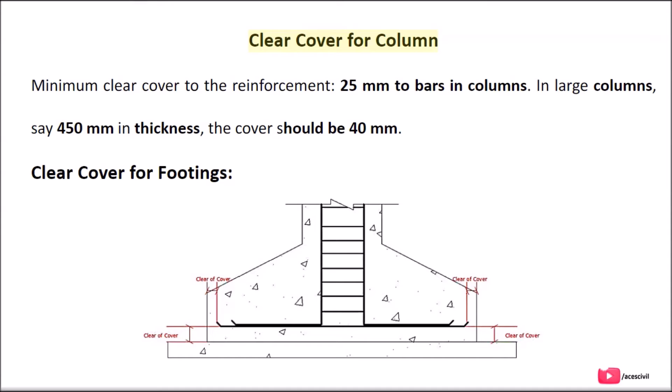Clear cover for columns: Minimum clear cover to the reinforcement is 25 mm for bars in columns. In large columns, say 450 mm in thickness, the cover should be 40 mm.